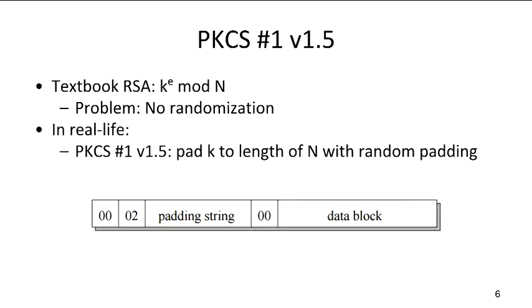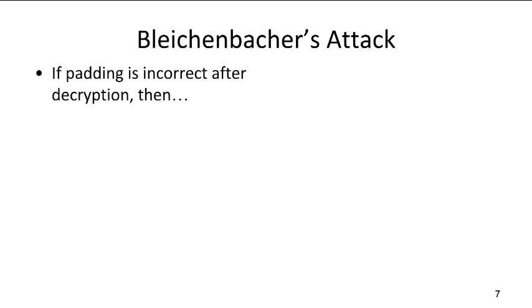We start with the most significant byte of value 0, then a byte of value 2, then non-zero padding bytes as long as needed to make the overall length what we want, then a zero delimiter byte, and then the actual data we want to send — the pre-master secret in the case of TLS. But the moment we have padding under encryption, the question arises: what should the decrypting party do if they decrypt the message and see that the padding is invalid? For example, if a TLS server decrypts the RSA ciphertext and sees that the plaintext doesn't start with bytes 0 and 2, what should it do?